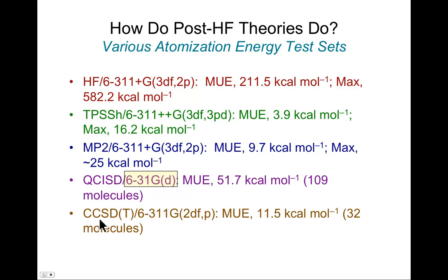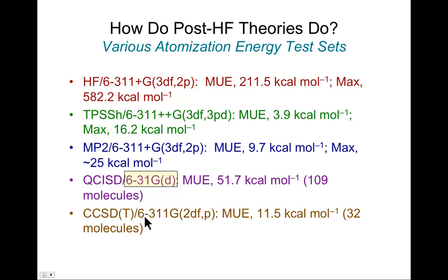Here is coupled cluster singles, doubles, parentheses T, with a halfway decent basis set. It's lacking the diffuse function and it's only got 2 D's instead of 3 D's, unlike the MP2 calculation. It was only possible to apply it to 32 different molecules, and it gives you roughly similar error to the MP2 calculation. Were you able to improve the basis set, you would expect better performance, but that can be a pricey undertaking.